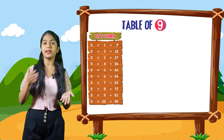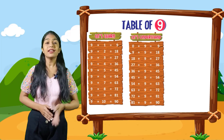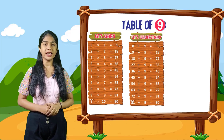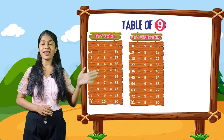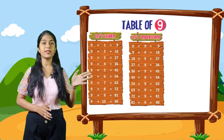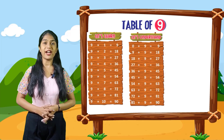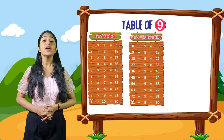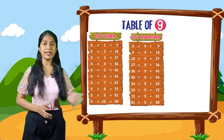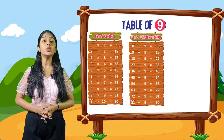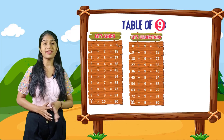So now let's understand. 0 plus 9 is equal to 9. 9 plus 9 is equal to 18. 18 plus 9 is equal to 27. 27 plus 9 is equal to 36. 36 plus 9 is equal to 45. 45 plus 9 is equal to 54. 54 plus 9 is equal to 63. 63 plus 9 is equal to 72. 72 plus 9 is equal to 81. 81 plus 9 is equal to 90.